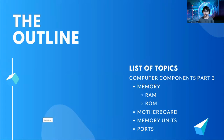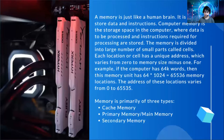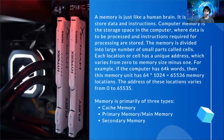Some of these topics were already discussed in the previous chapter, so we'll do a recap. Let's start with computer memory. So what is memory? Memory is like a human brain. It is used to store data and instructions. Computer memory is the storage space in the computer where data is to be processed and instructions required for processing are stored.